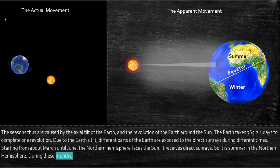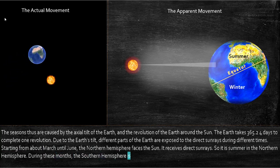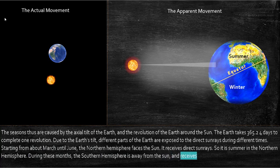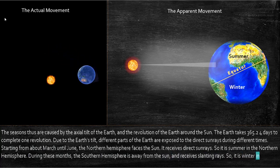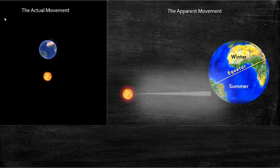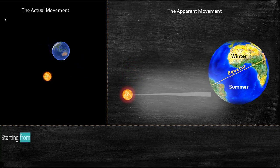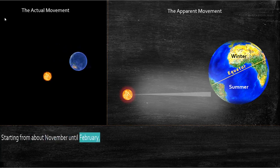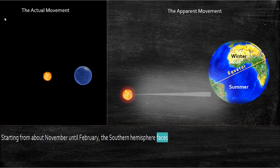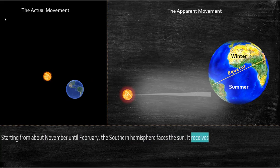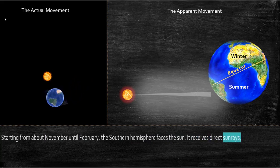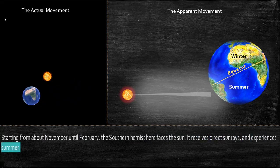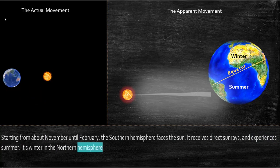During these months, the southern hemisphere is away from the sun and receives slanting rays, so it is winter in the southern hemisphere. Starting from about November until February, the southern hemisphere faces the sun, receives direct sun rays, and experiences summer. It is winter in the northern hemisphere during these months.